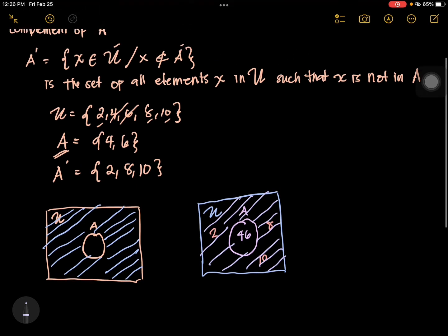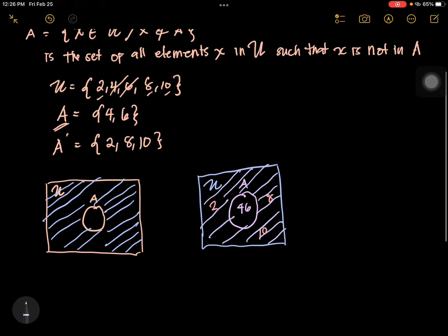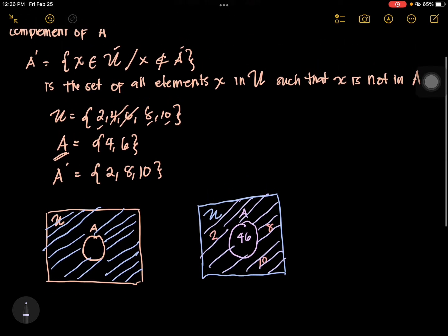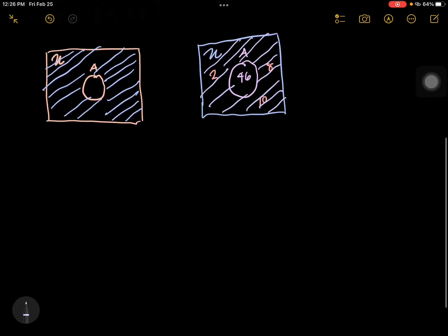That is complement of A. For the definition, it should satisfy both propositions: it is an element of the universal set but not an element of the given set, which here is A. Let's have another example.